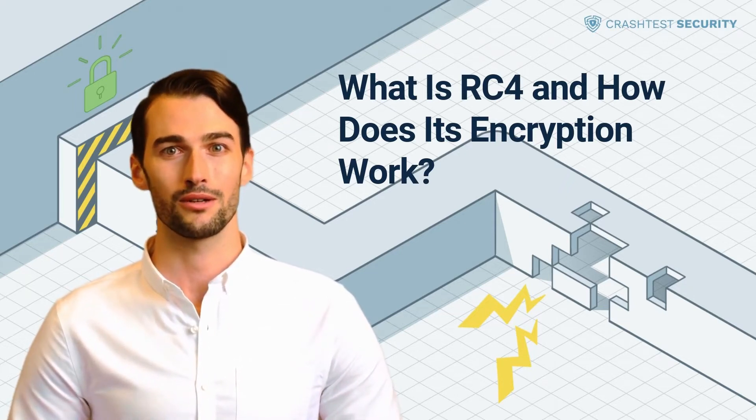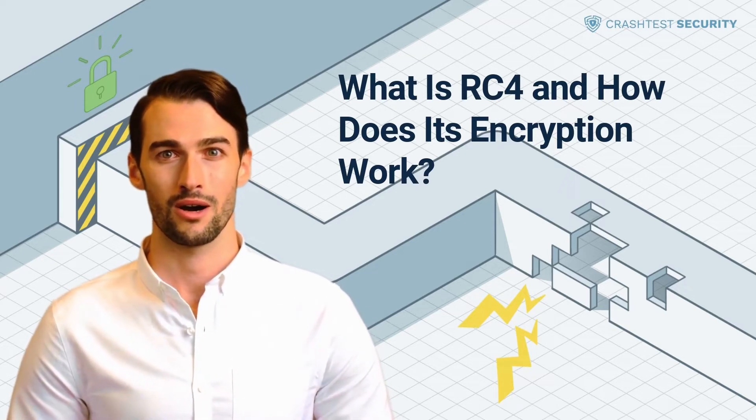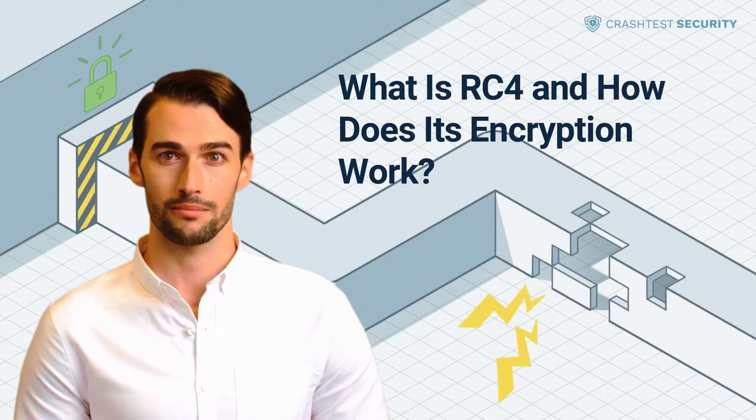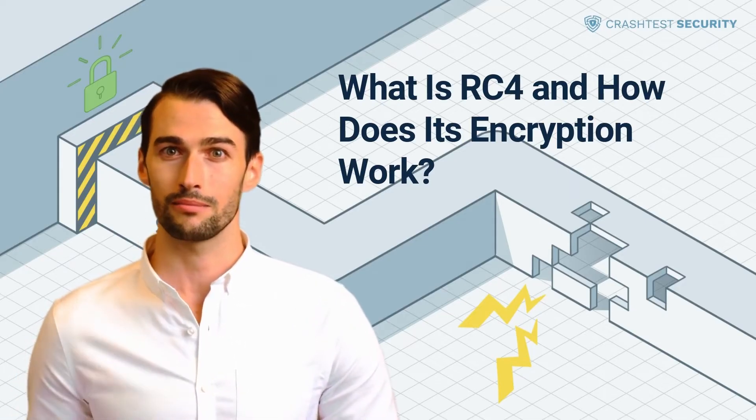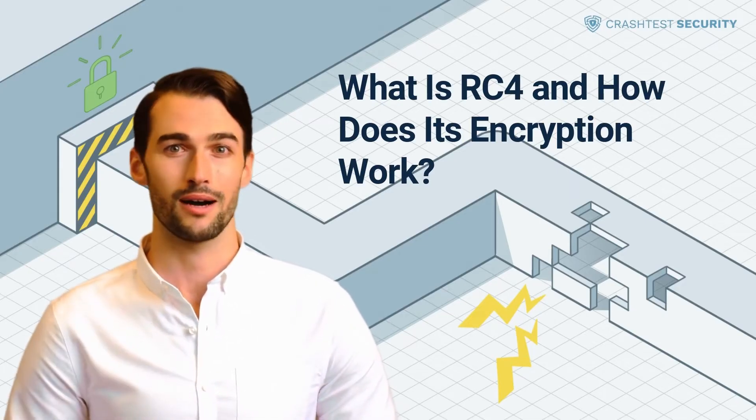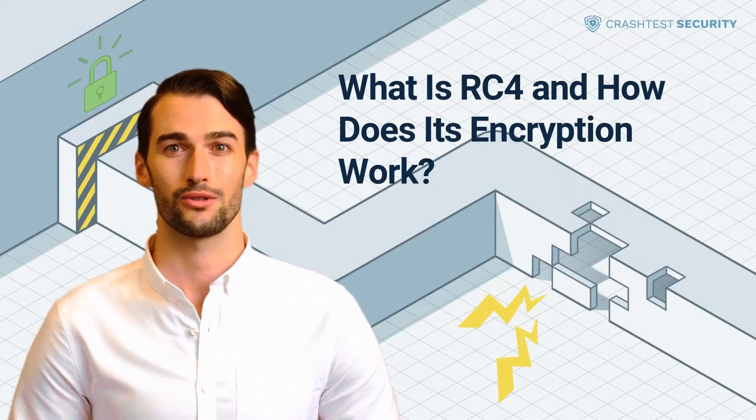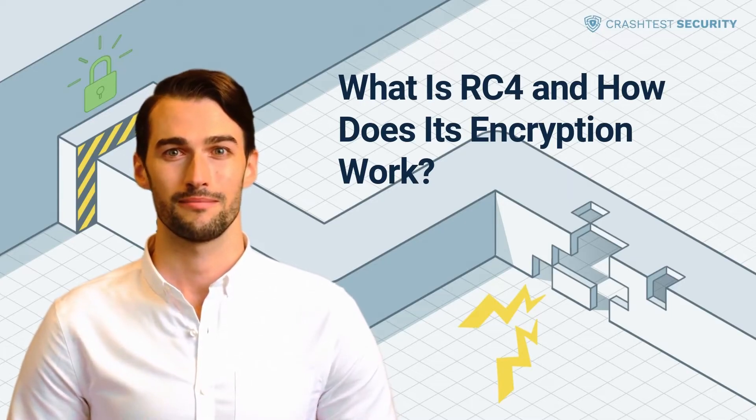Unlike stream ciphers, block ciphers separate plaintext into different blocks. Then they attach the plaintext to the blocks and perform encryption on them.